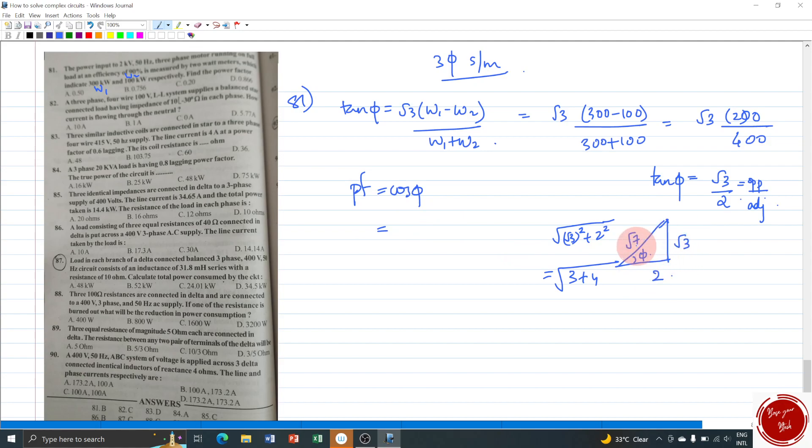Now what is the cos phi from this simple right triangle? It is the adjacent side divided by hypotenuse. So it is 2 by root 7. Now let us check the options. Option A is 0.5, 0.5 means it is 1 by 2. So option A is not the right one.